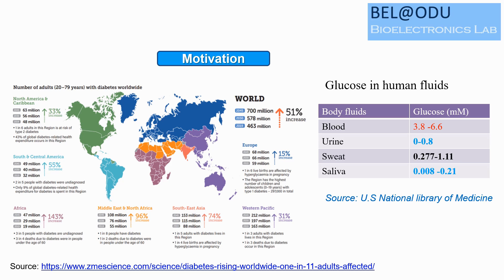Glucose levels in human body fluids are: blood 3.8 to 6.6 mM, urine 0 to 0.8 mM, and sweat 0.27 to 1.11 mM. This amount of glucose level in body fluids is sufficient for making a self-powered glucose biosensor.